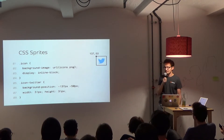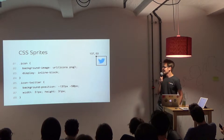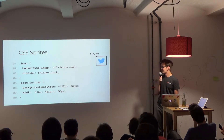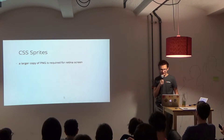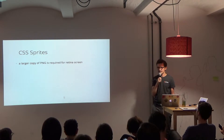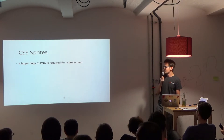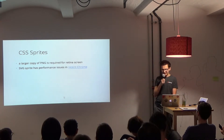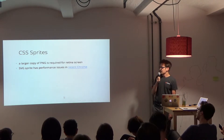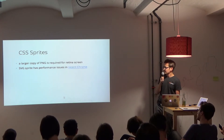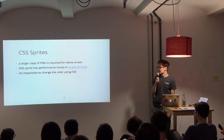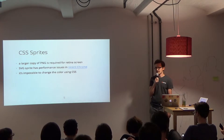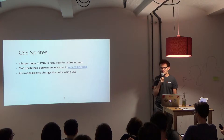Everyone is probably familiar with CSS sprites. You combine all the images into one sprite sheet, and then you change the background position to offset the image. But this method has its own drawbacks. If you want to use it with raster images such as PNG, you have to create a separate image twice as big for retina display. If you choose to create a sprite out of SVG, it has some performance issues. And also, it is not possible to change the color with CSS — you have to bundle two copies of the same image with different colors.